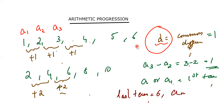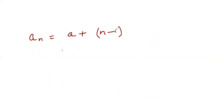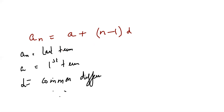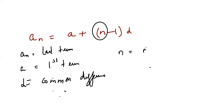So the general formula — I'll write it down here: aₙ is equal to a plus (n minus one) into d. Just now we discussed what aₙ is — aₙ is my last term. A or a₁ is my first term. D is my common difference. And n is nothing but the number of terms.